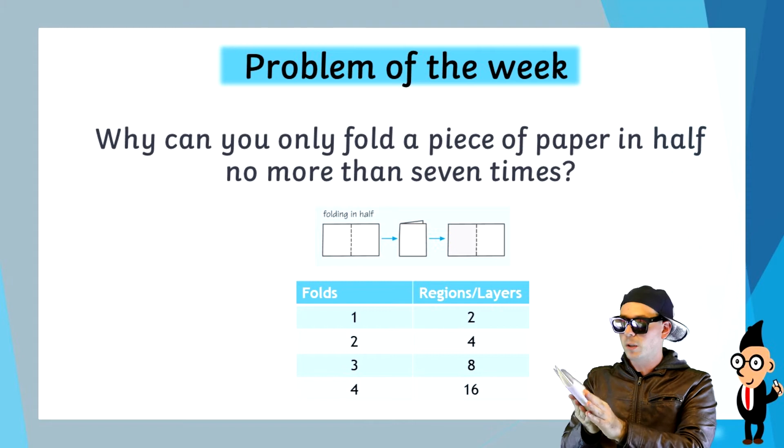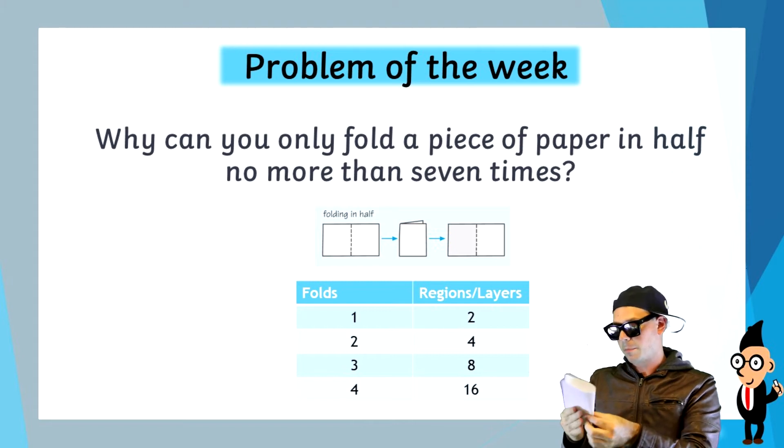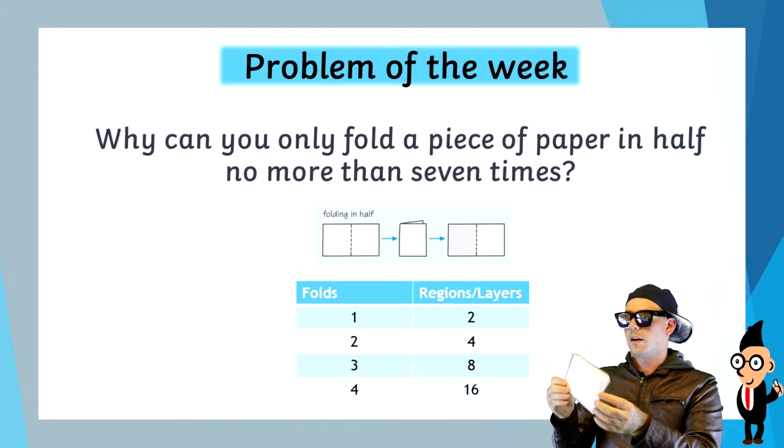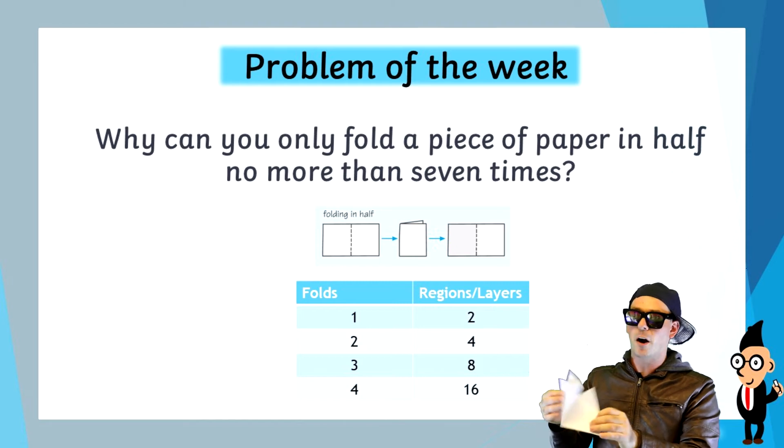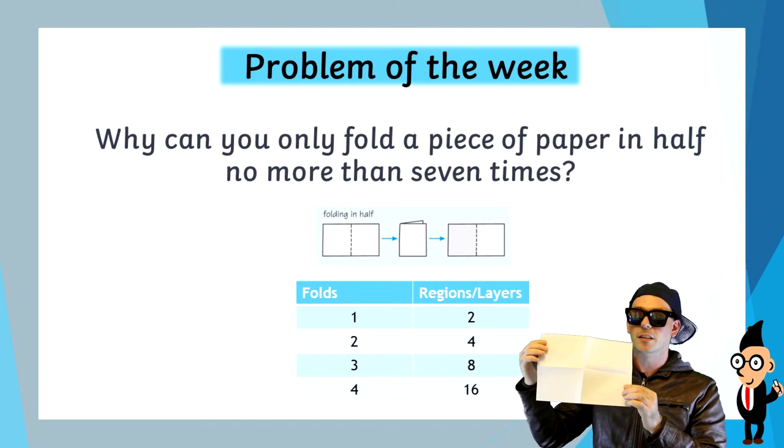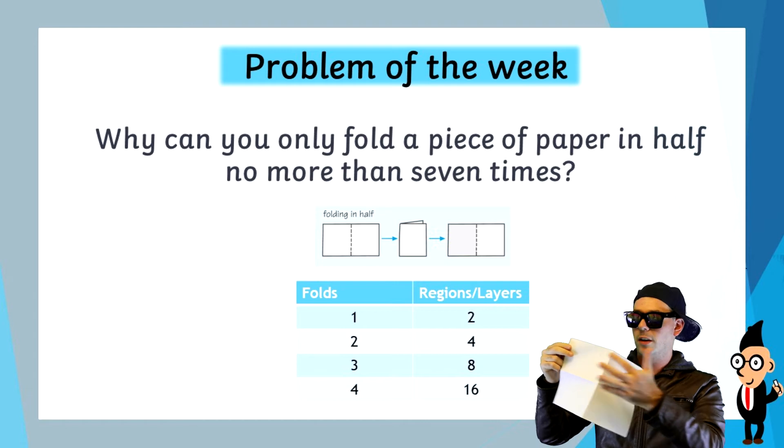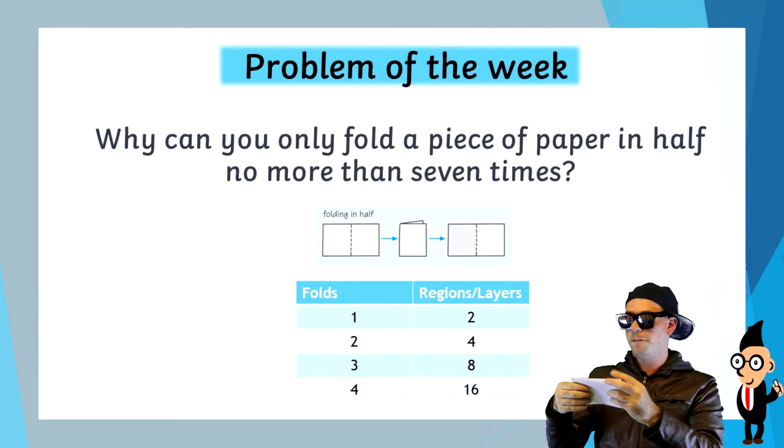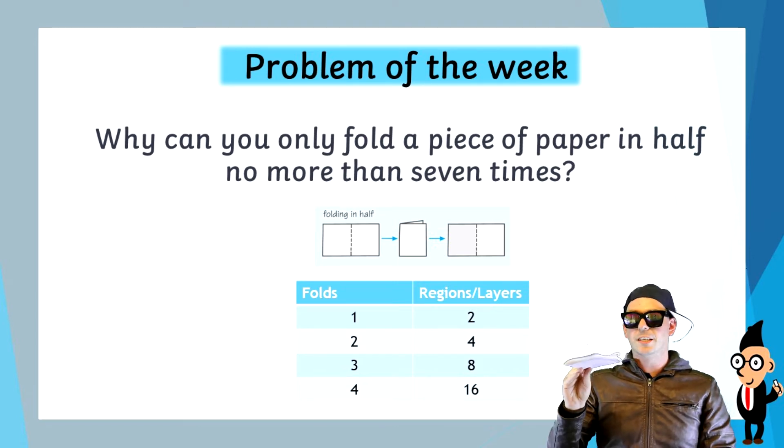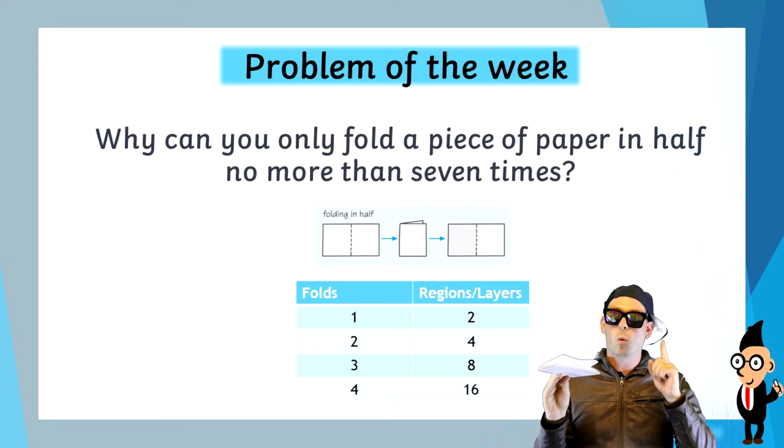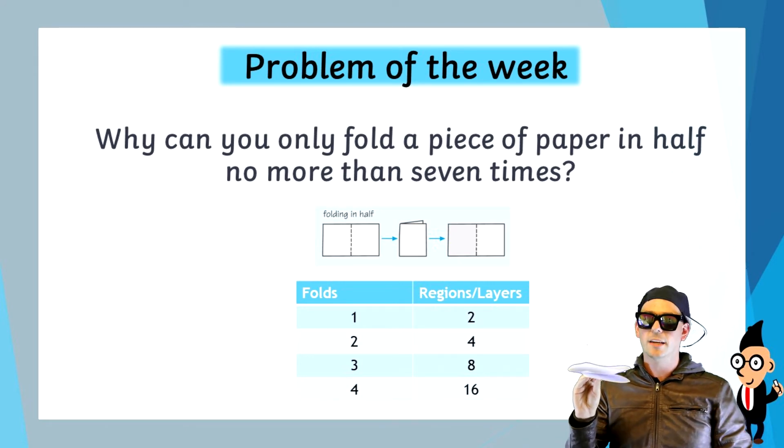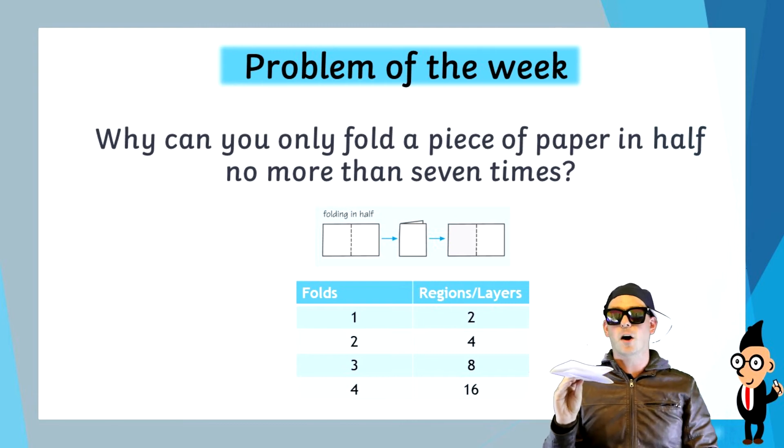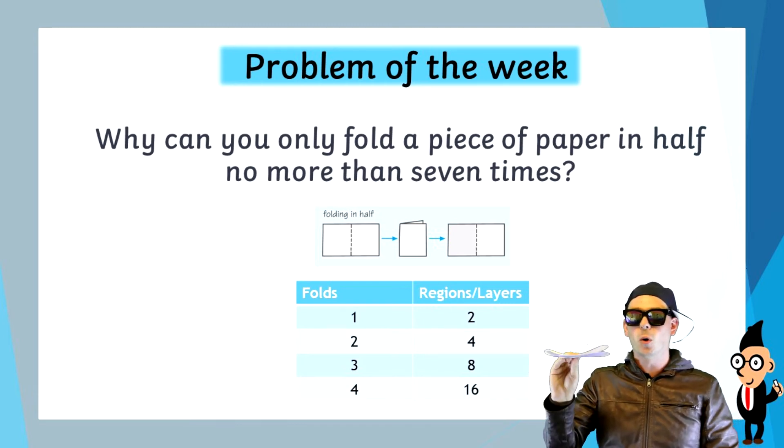If I fold it a second time, now after two folds, the paper has four regions: one, two, three, four. And when you fold it up, those regions become four layers. So after one fold it had two layers, and after two folds it has four layers.